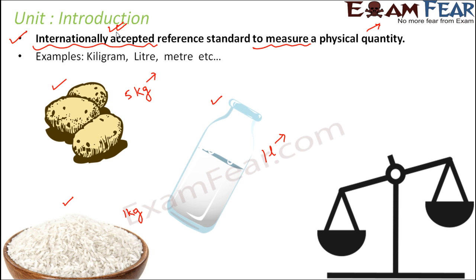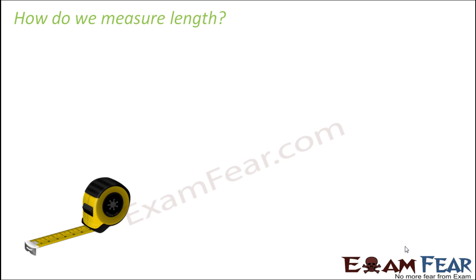When you tell the shopkeeper you need 5 kg of potatoes, he puts them on his weighing balance, measures 5 kg, and gives it to you — a simple process. Now, since we have been talking about distance, and distance is all about length, when we talk about distance we are basically talking about the length of the path being covered. So how do we measure length? What are the units for length?